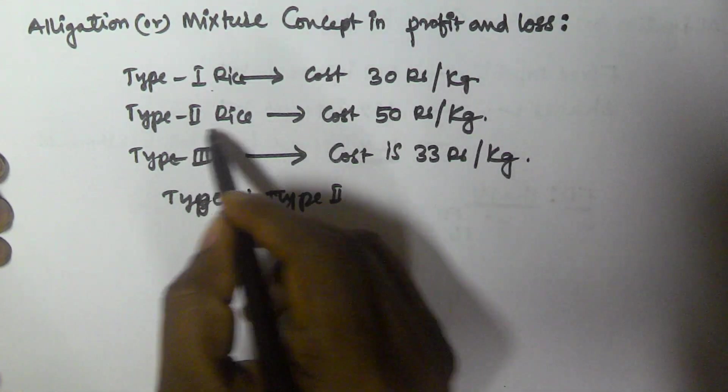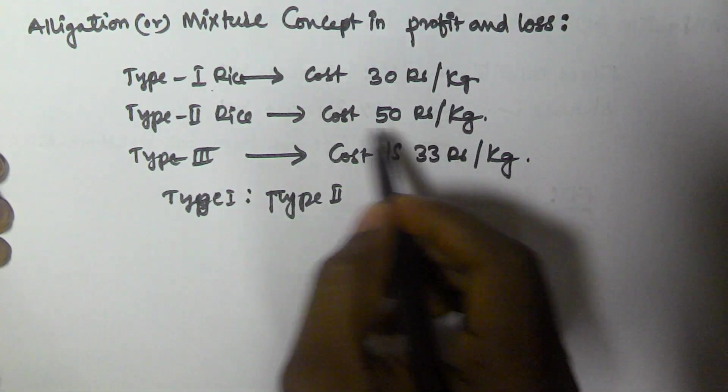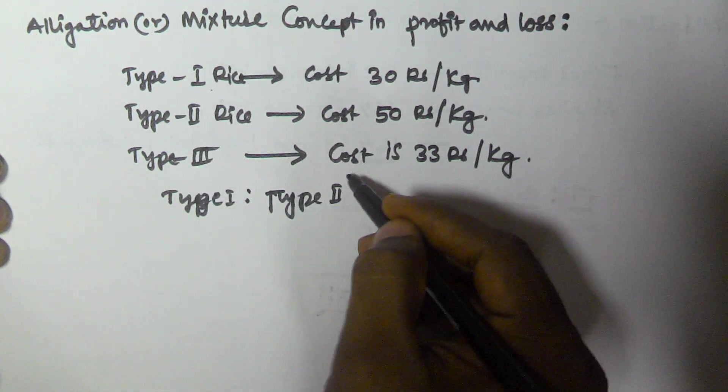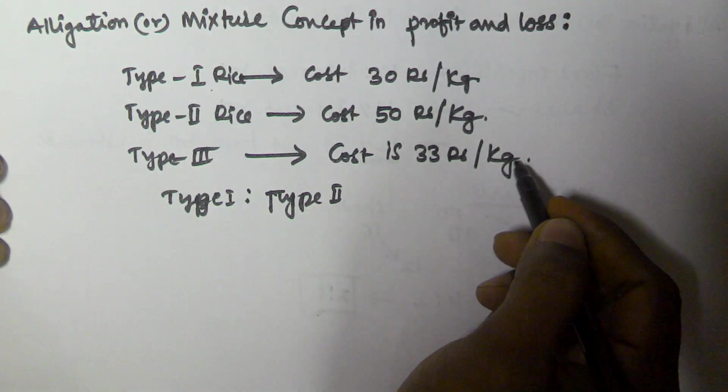Type 1 rice costs 30 rupees per kg and Type 2 costs 50 rupees per kg. He combined both of them and created Type 3 rice that costs 33 rupees per kg. We have to find the ratio in which Type 1 and Type 2 are added together to create Type 3 rice.